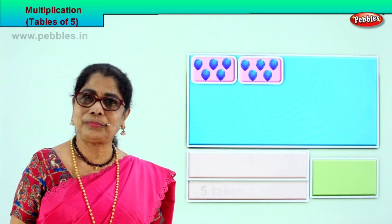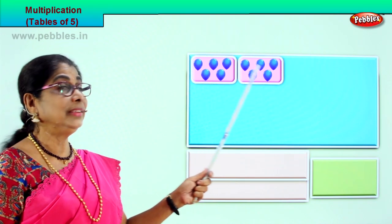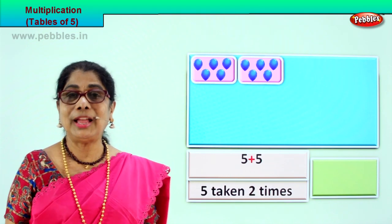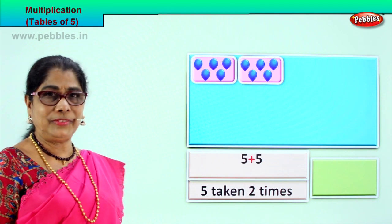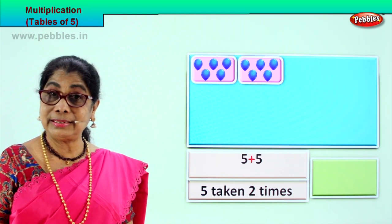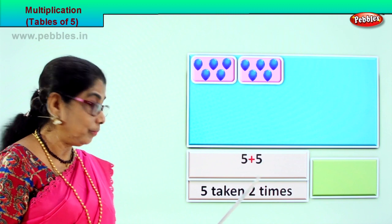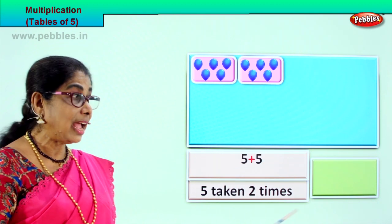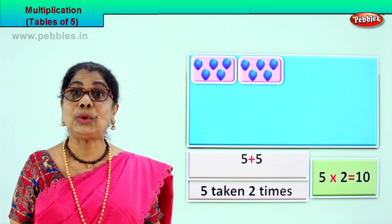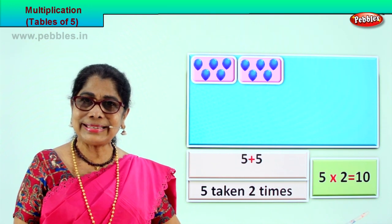Let's look at the next grouping of five. Here is five, here is five. How many groupings? Two. Five taken two times. Multiplication is repeated addition. Five plus five is ten. How do we write this? Five into two is equal to ten. Five twos are ten. Good.